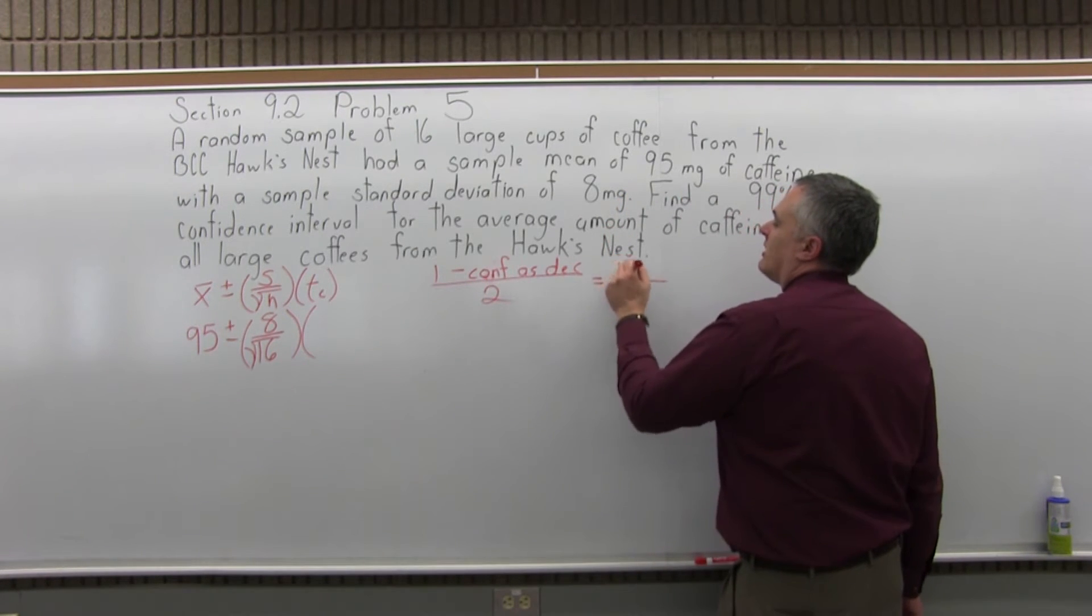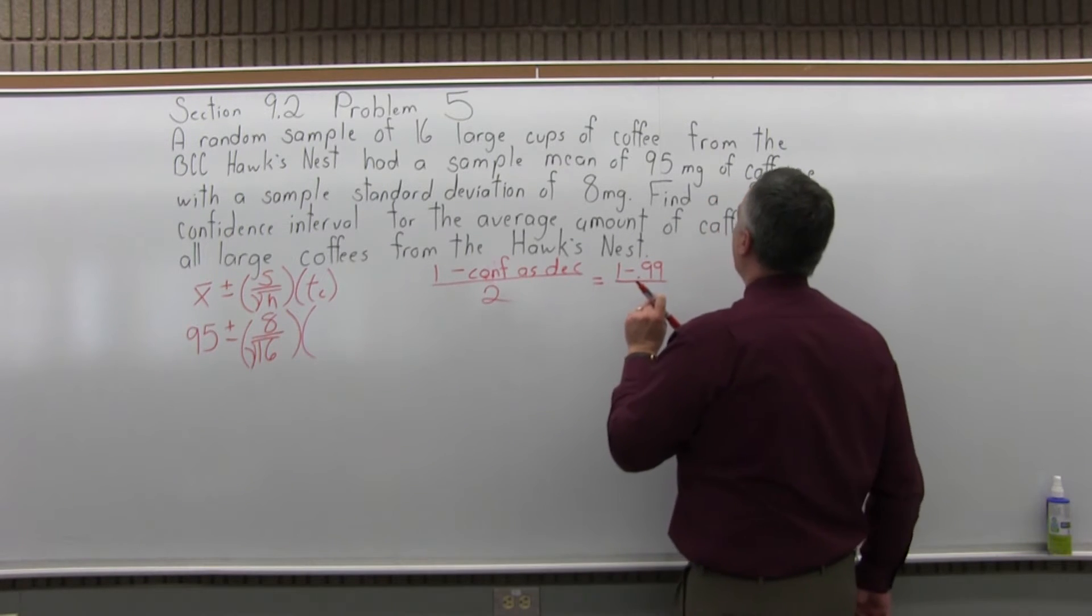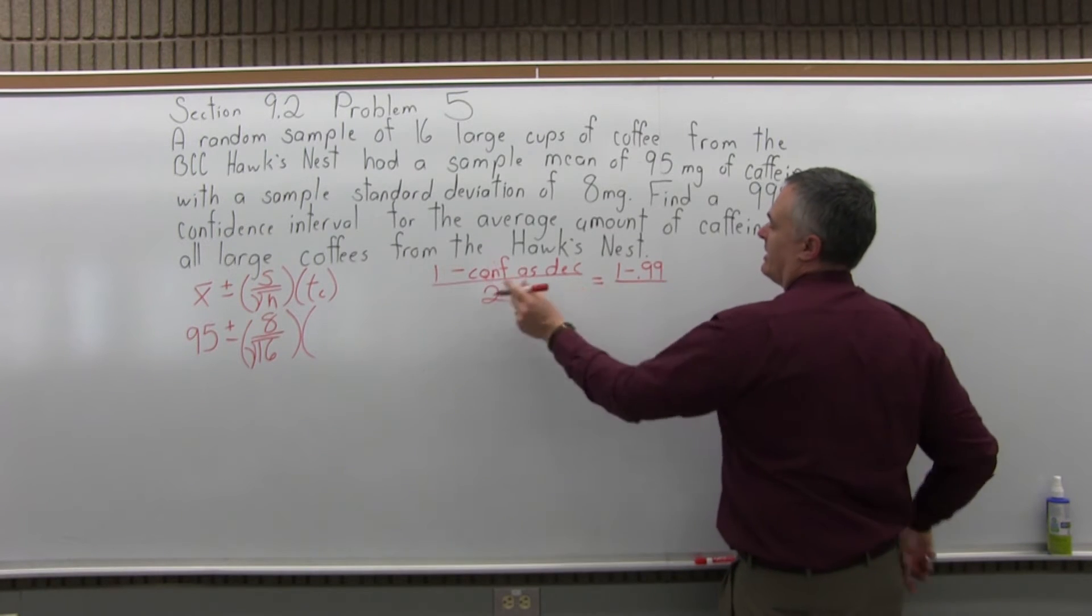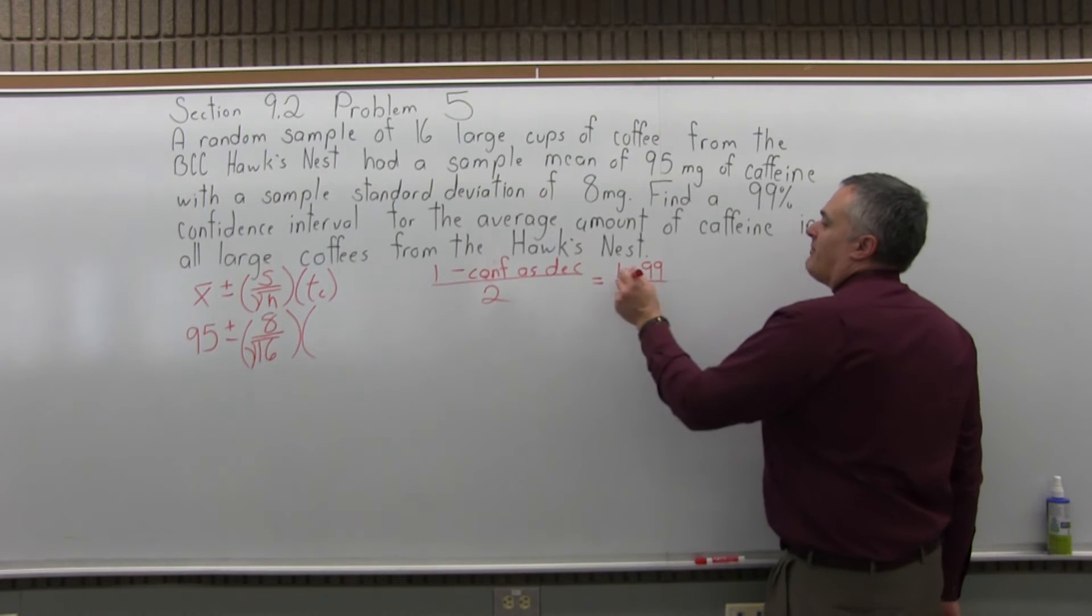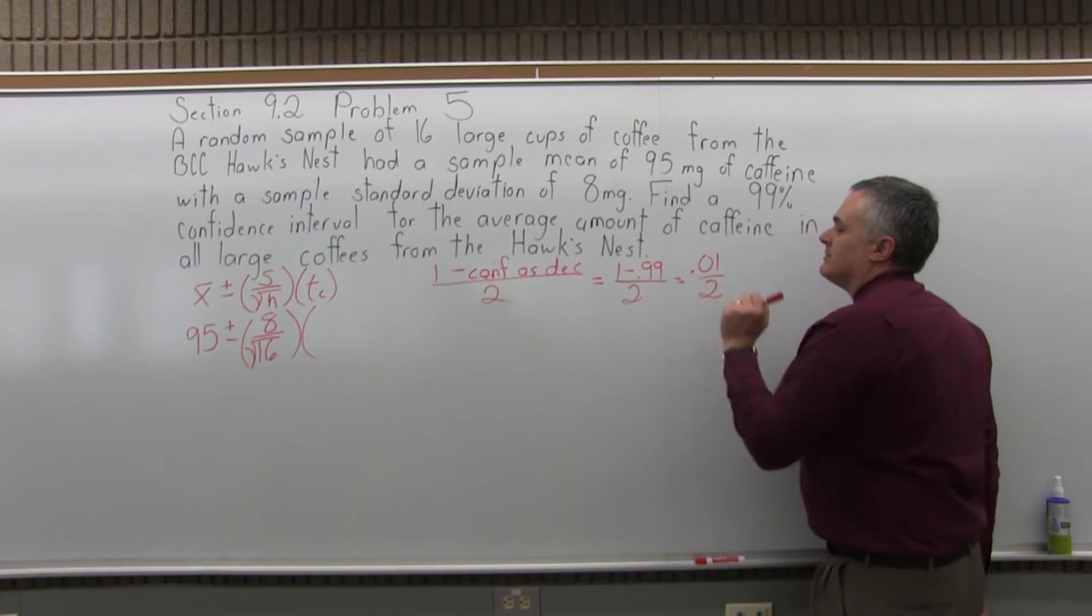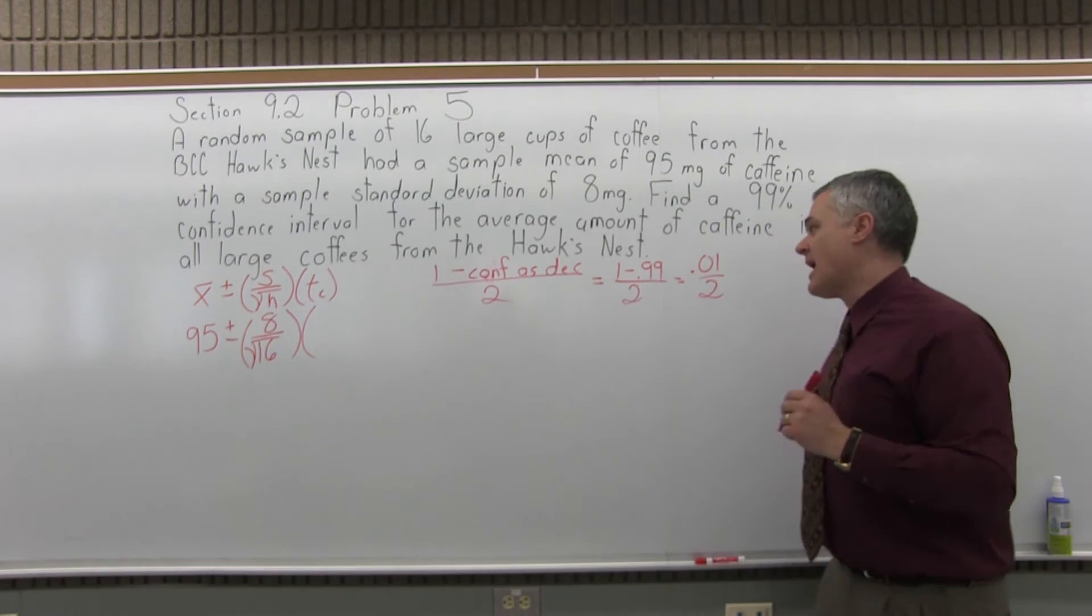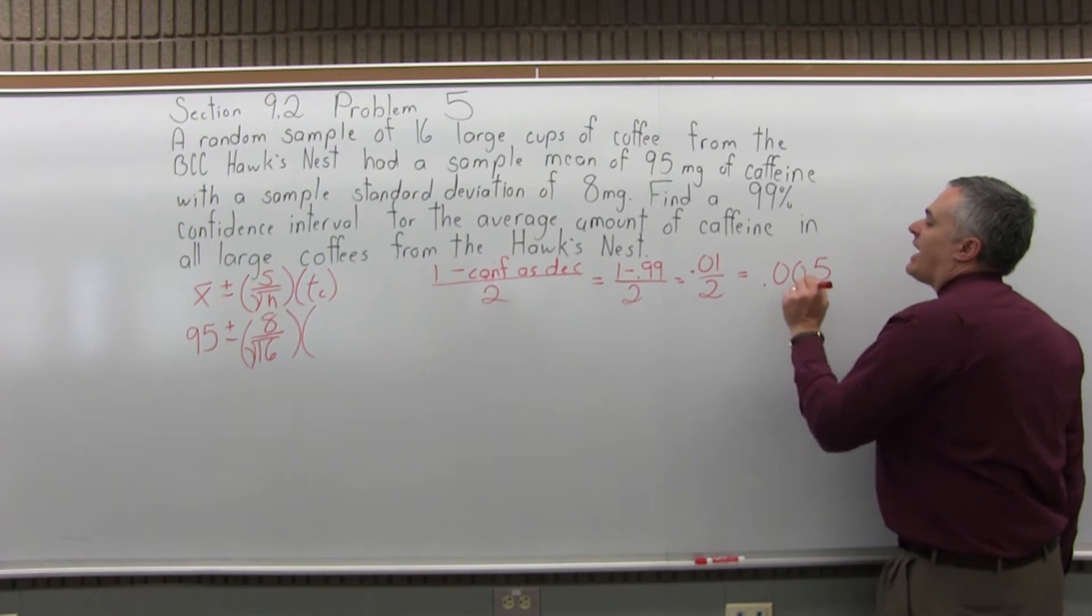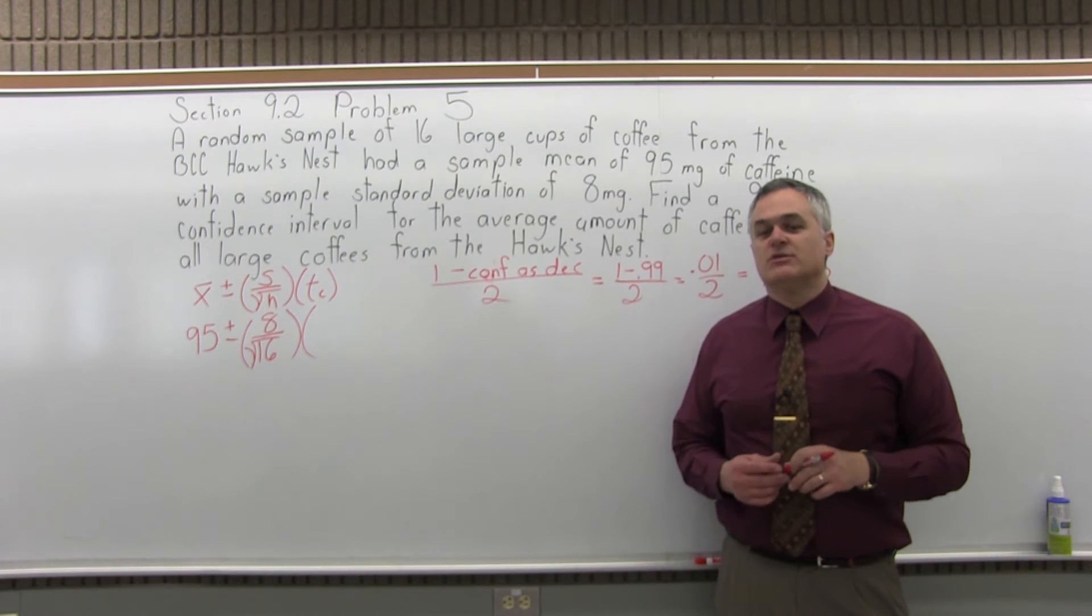So 1 minus the confidence interval as a decimal is 1 minus 0.99. This is a 99% confidence interval, so as a decimal it's 0.99. Don't forget the 2 in the denominator. So 1 minus 0.99 is 0.01. And when you divide that by 2, you get 0.005. And that 0.005 is the column heading that you want to look under in your student's t distribution chart.